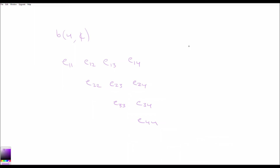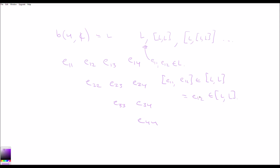If we call this L and take L, then L bracket L, then L bracket L bracket L, and so on, observe that e11 and e12 are both elements of L. If you bracket e11 with e12, that is an element of L bracket L, and this is actually equal to e12. So e12 is an element of L bracket L. But if e12 is in L bracket L, then bracketing with e11 again means e12 is an element of L bracket L bracket L as well. So e12 is an element of L to the i for all i.